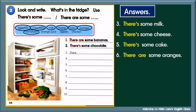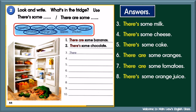7. Tomatoes — countable or uncountable? Yes, countable in the plural form. So, start with there are some. There are some tomatoes. 8. Orange juice — can you count orange juice? No, uncountable. So, start with there's some. There's some orange juice. 9. Apples — can you count apples? Yes, countable in the plural form. So, use there are some. There are some apples. 10. Chicken — countable in the plural form.